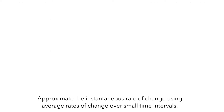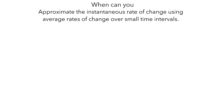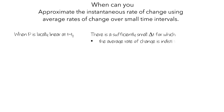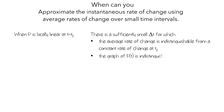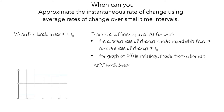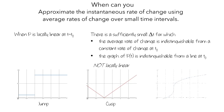To summarize: when can you approximate the instantaneous rate of change using average rates of change over small time intervals? You can do this when the function is locally linear at the particular value t-naught. This means there is a sufficiently small delta t for which the average rate of change is indistinguishable from a constant rate of change, and the graph of p of t is indistinguishable from a line at t-naught. A function may fail to be locally linear when it has a jump, a cusp, or a vertical tangent.